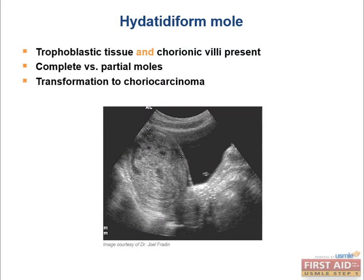It's extremely important to know that both trophoblastic tissue and chorionic villi are present in a mole. Trophoblastic tissue is tissue of the placenta. A choriocarcinoma is a cancer that arises from trophoblastic tissue, but chorionic villi are not present in choriocarcinoma. If a biopsied suspicious mass shows only trophoblastic tissue, it's a choriocarcinoma. If both trophoblastic tissue and chorionic villi are present, the answer is an invasive mole.